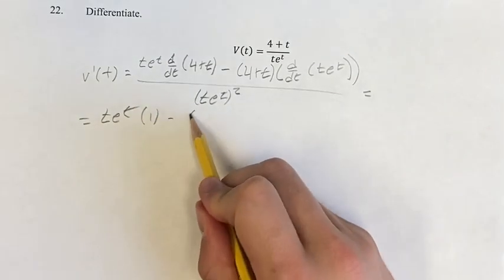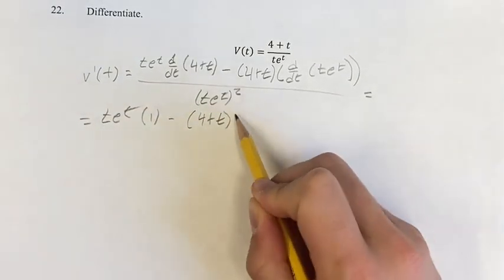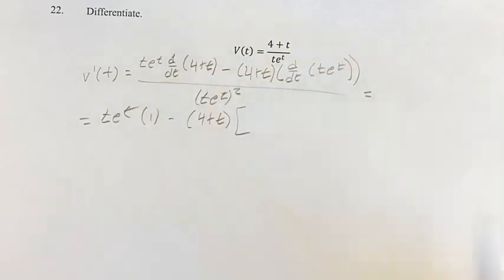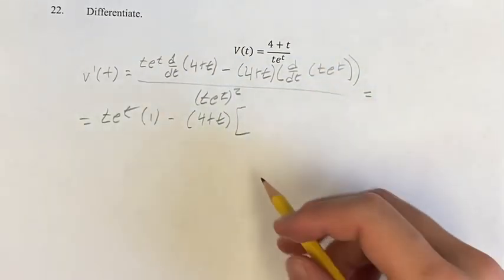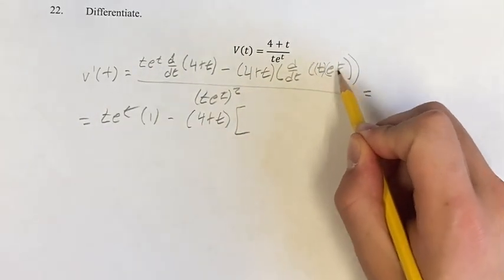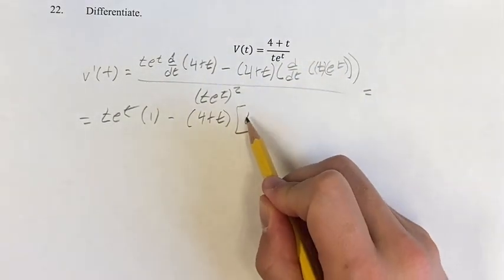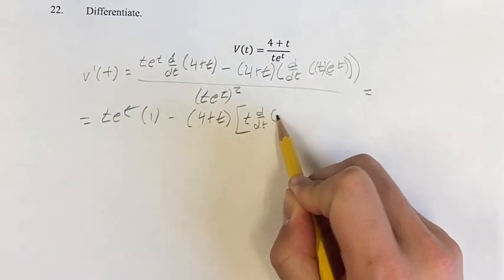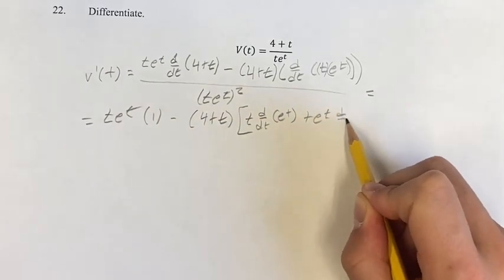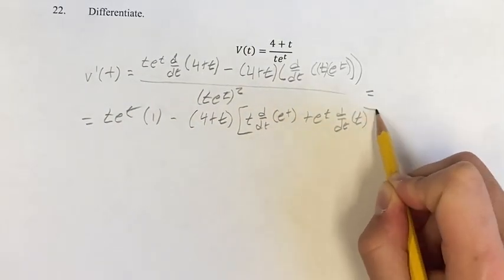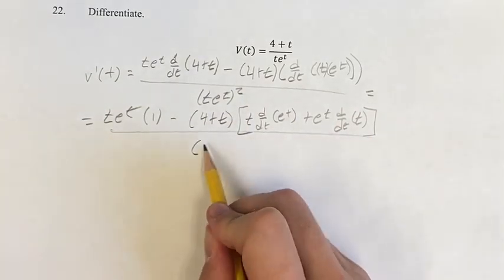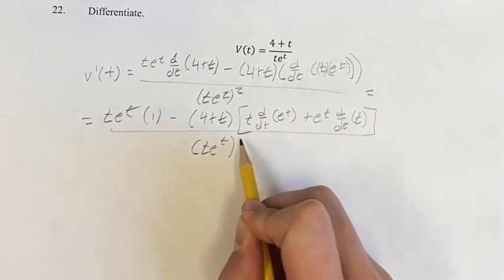minus 4 plus t times the derivative of t e to the t. To solve this, we can use the product rule, since this is t times e to the t. So this is going to be t times the derivative of e to the t, plus e to the t times the derivative of t. And this is all over t e to the t squared.